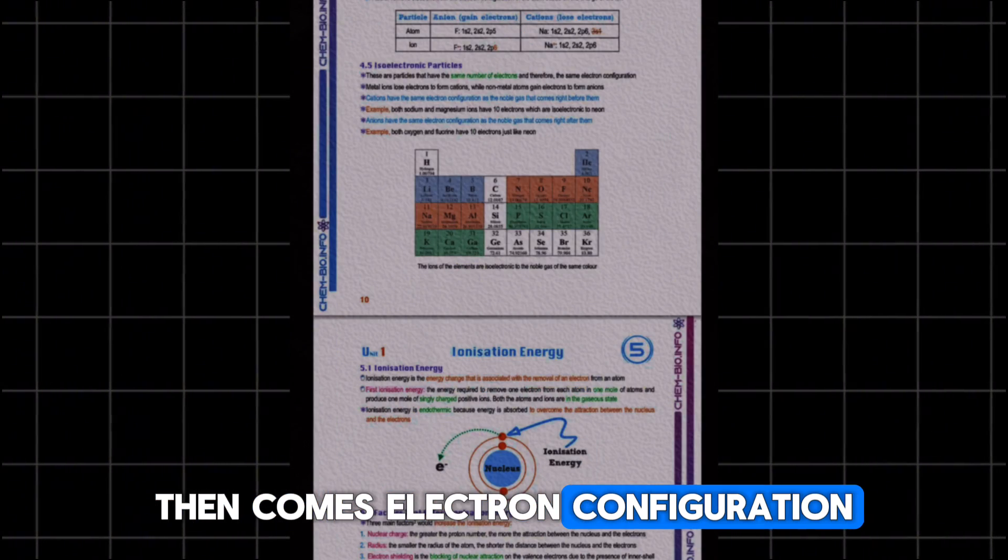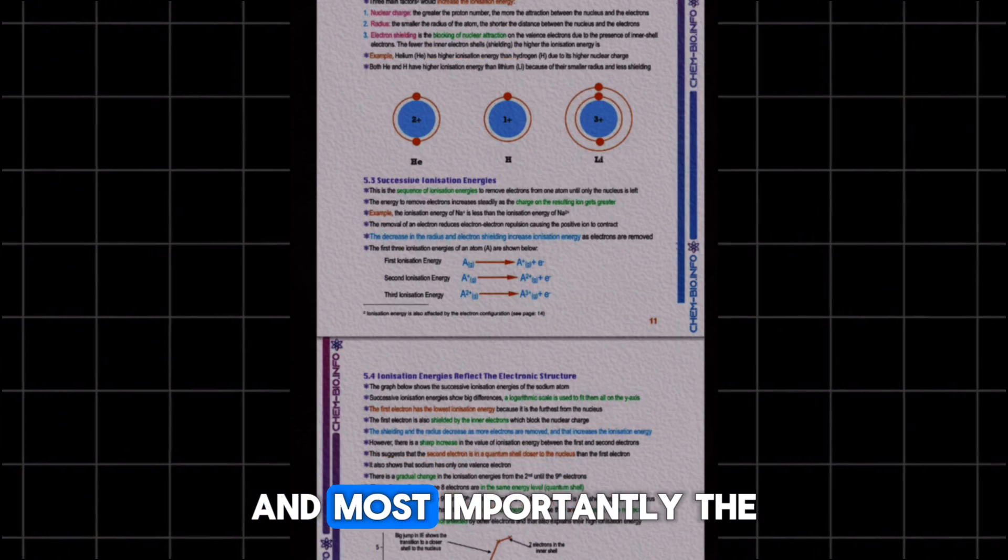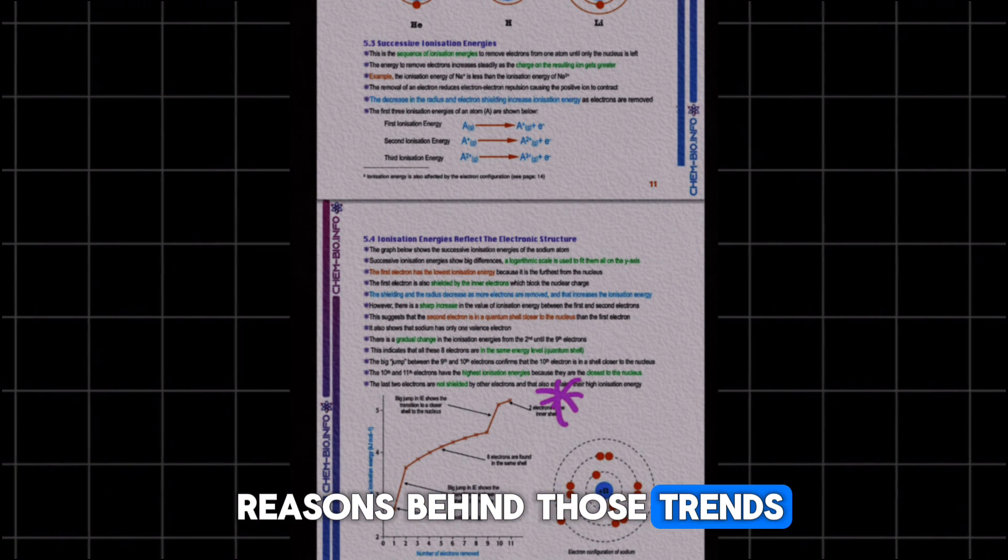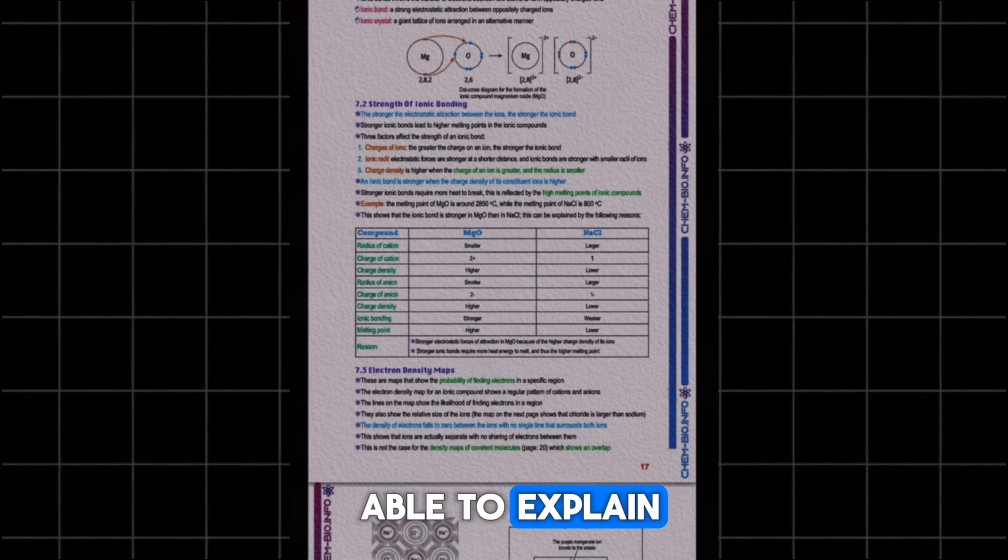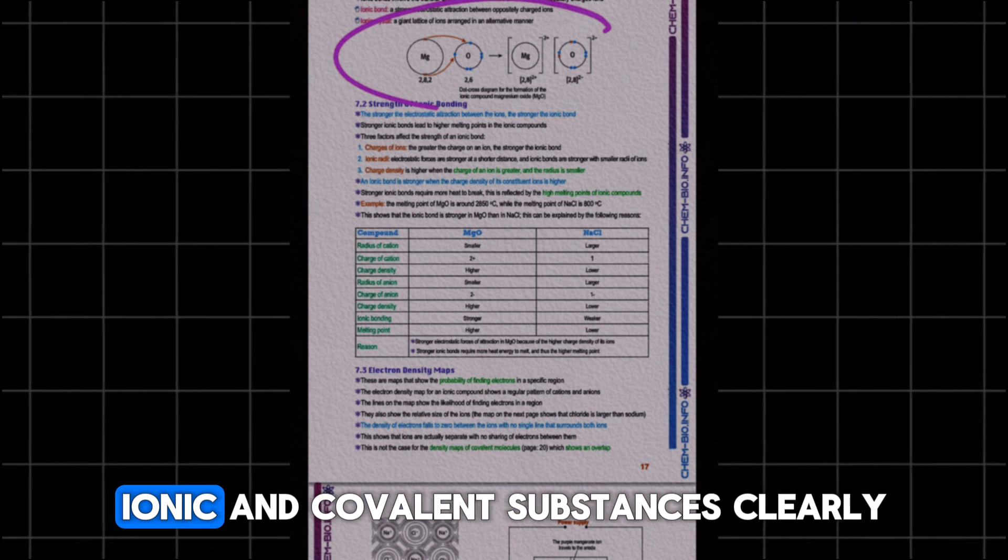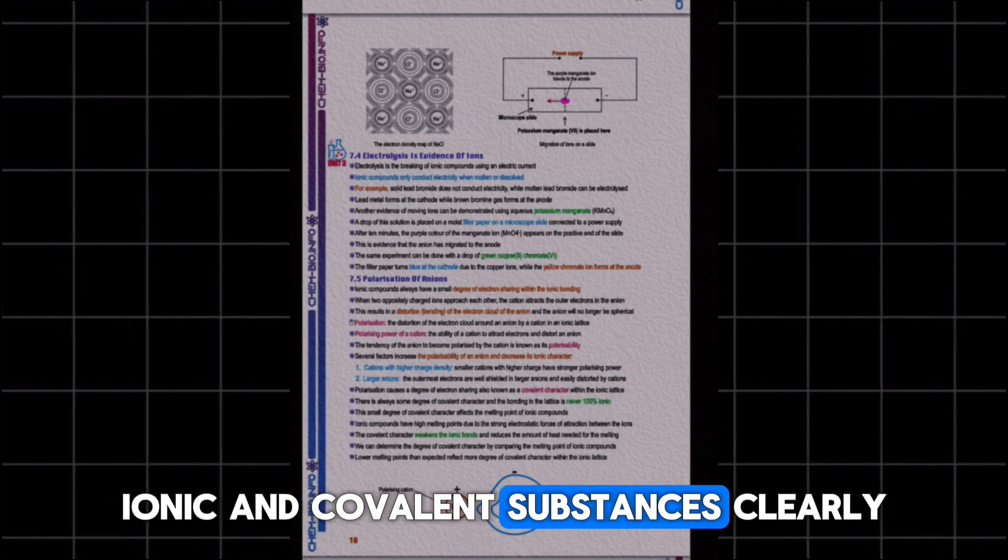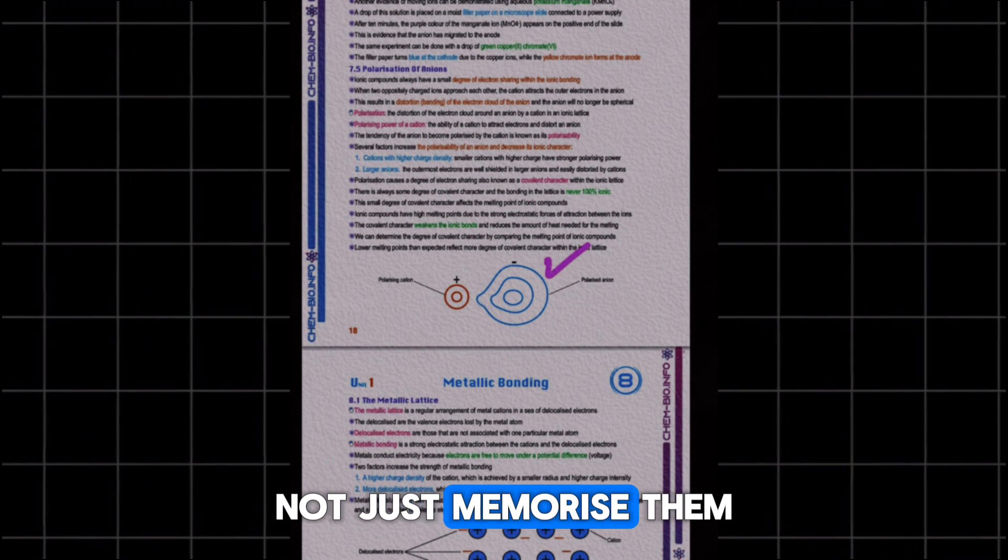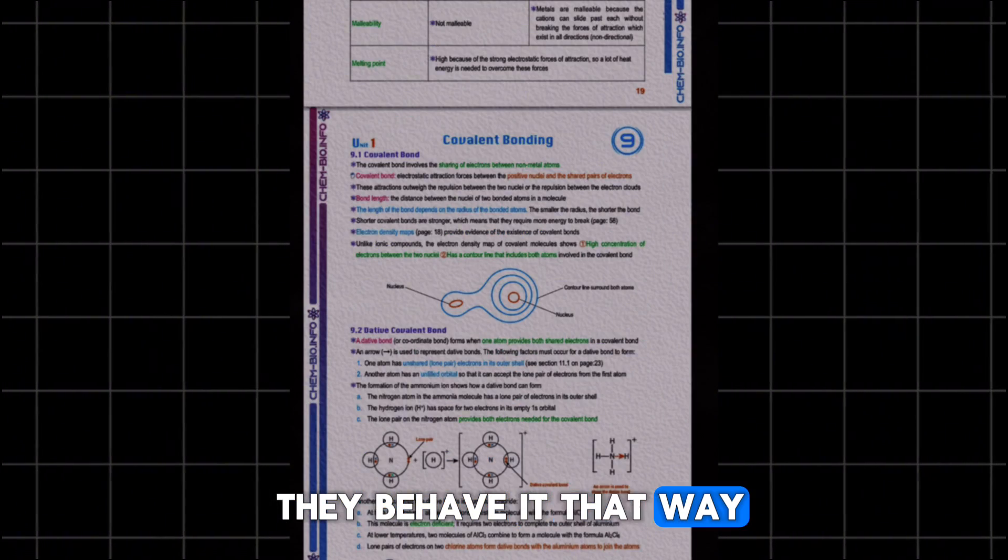Then comes electron configuration, periodic trends, and most importantly, the reasons behind those trends. You should also be able to explain the properties of metallic, ionic, and covalent substances. Clearly, not just memorize them, but really understand why they behave that way.